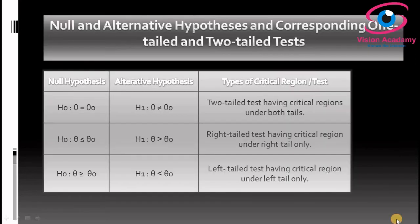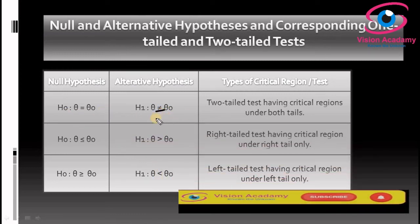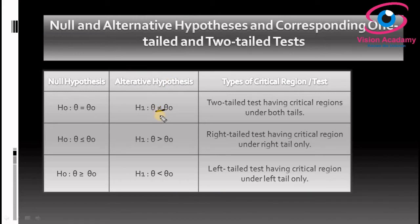Here is a tabulation chart of null and alternative hypotheses and the corresponding one-tailed and two-tailed tests. Follow this chart for a better understanding of the type of tailed test. As we know, if your null hypothesis is theta equal to theta and the alternative hypothesis is theta not equal to theta, you must concentrate on the symbol of the alternative hypothesis.